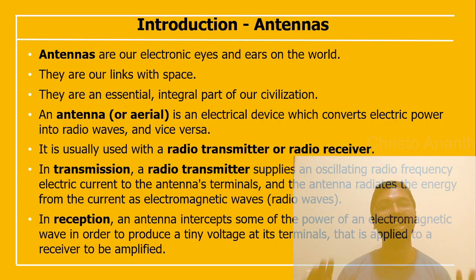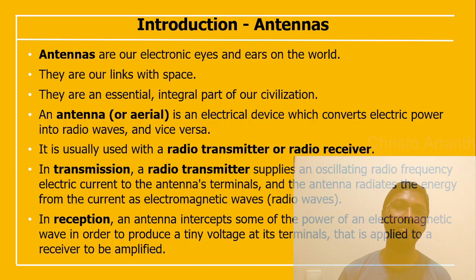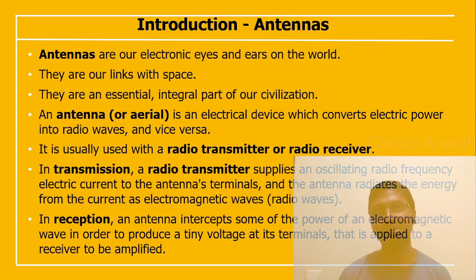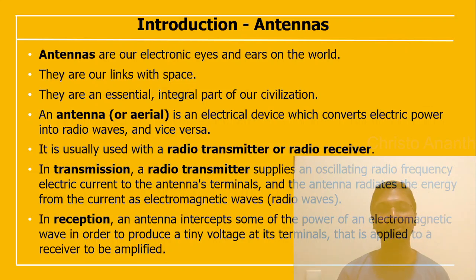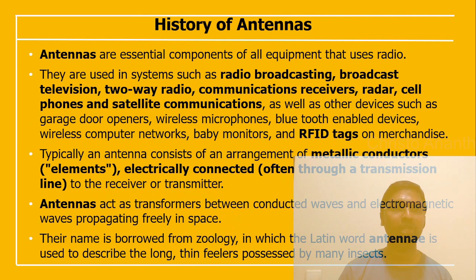Antennas are the electronic eyes and ears of the world — they are the links with space. An antenna, also called an aerial in earlier days, is an electrical device that converts electrical power into radio waves and vice versa. It is used with a radio transmitter or radio receiver. In transmission, a radio transmitter supplies an oscillating radio frequency electrical current to the antenna's terminals, and the antenna radiates the energy as electromagnetic waves. In reception, the antenna intercepts some power of the electromagnetic wave to provide a small voltage at its terminals, which is then amplified by the receiver.